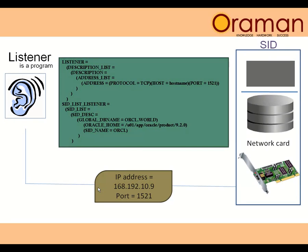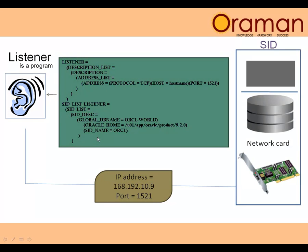First, let's look at the listener program or listener file on the server side. The listener file will have configuration that tells it to listen at a particular host or IP address on a particular port for incoming requests from the client side. It will also specify the SID, which is a system identifier for the server. When you create an Oracle instance, you give it a SID or service name. The listener is basically listening at this IP address or host name at the port and connecting to that particular SID or service name. Its purpose is to listen at the corresponding address and hand over incoming requests to the database.